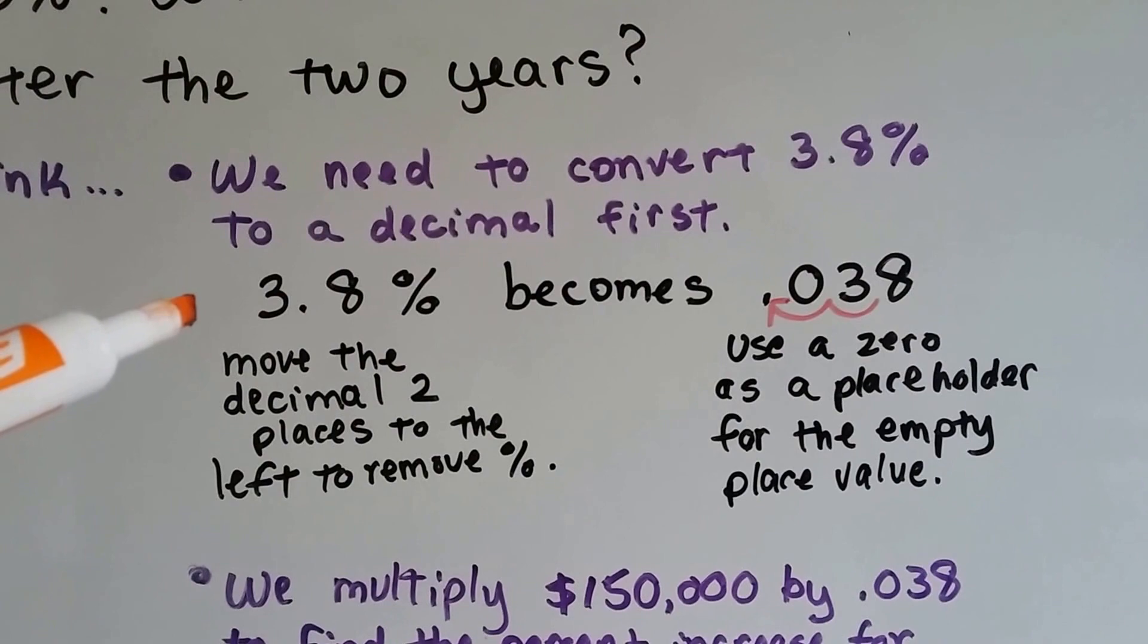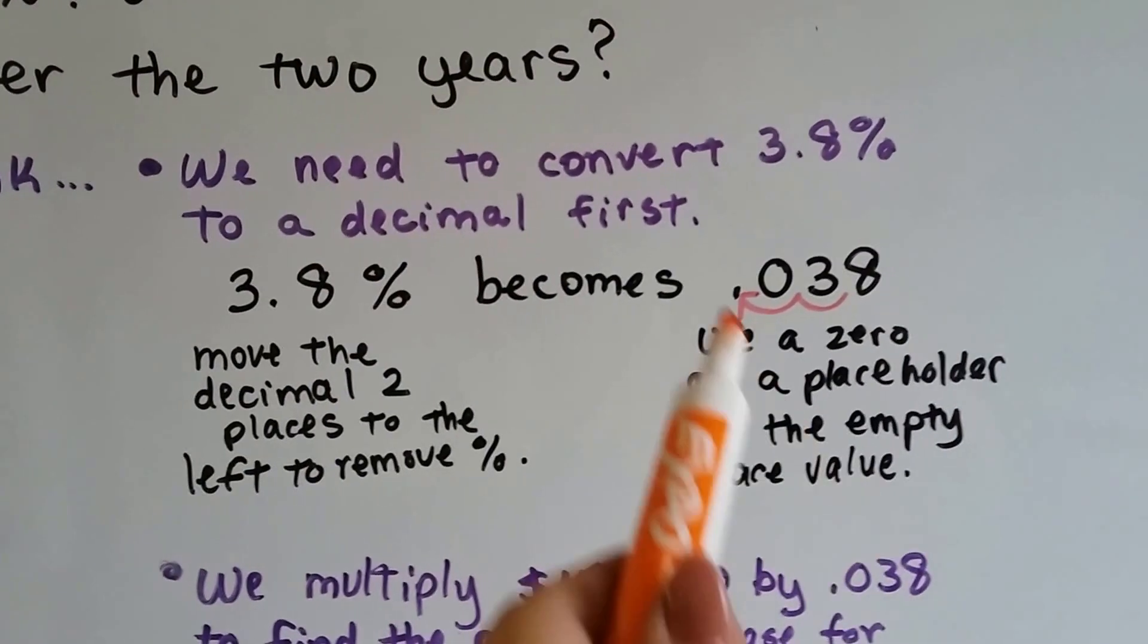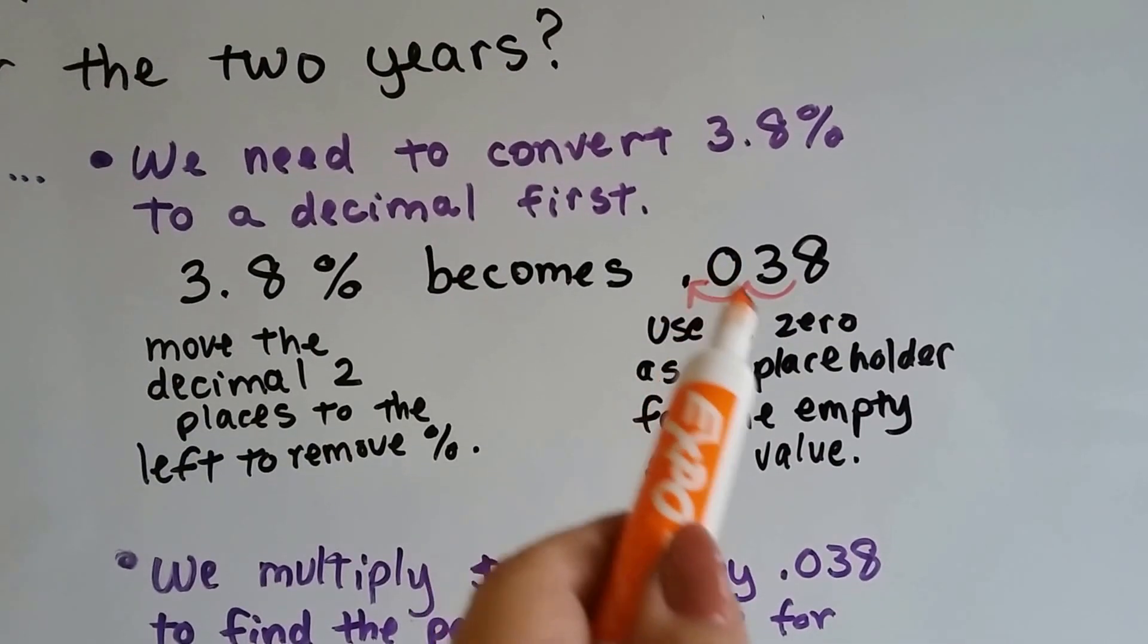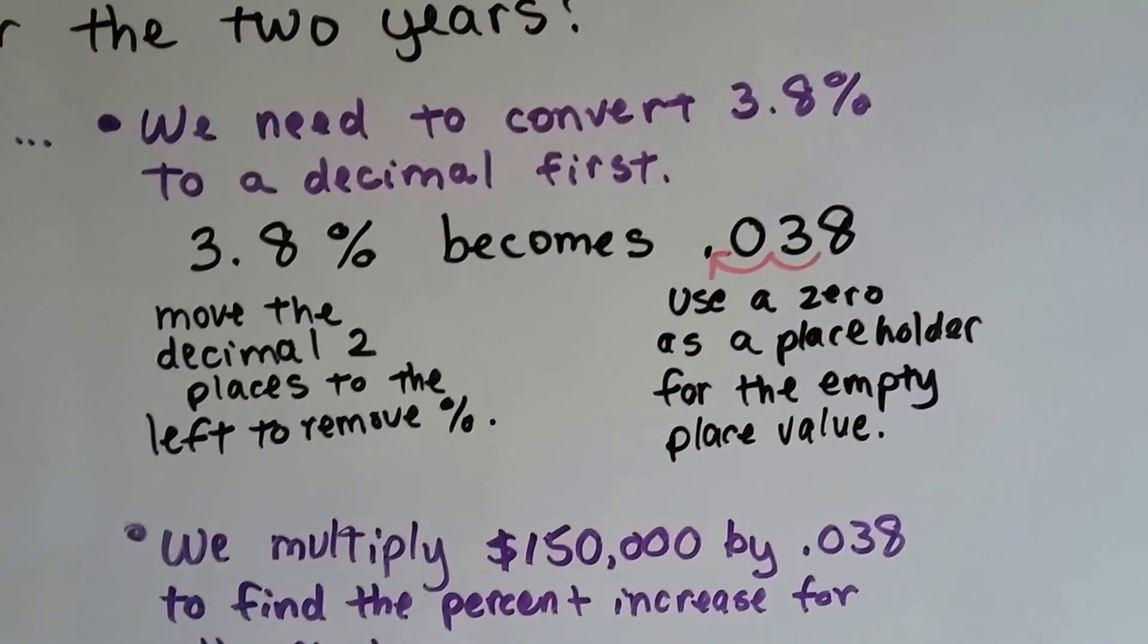And it's going to become 0.038. And because we had nothing there, it was an empty spot, we put a zero there as a placeholder.